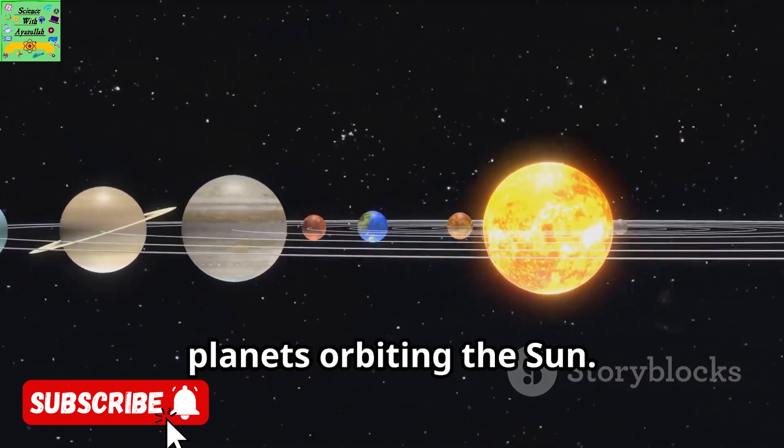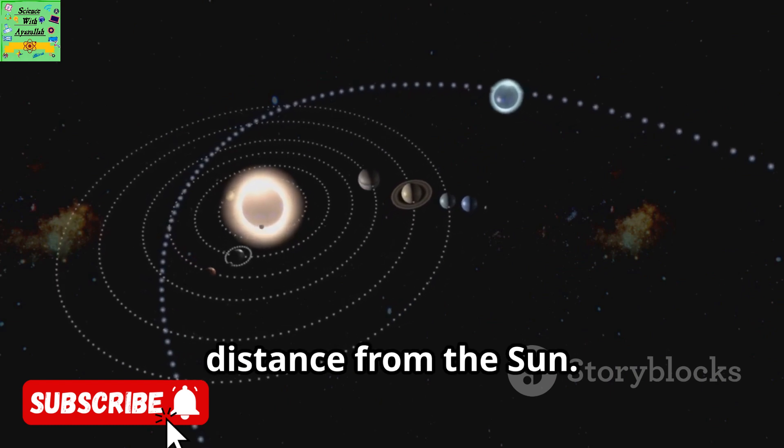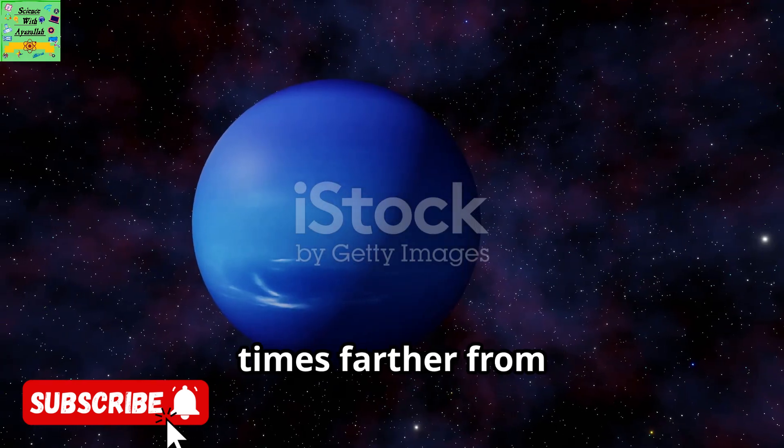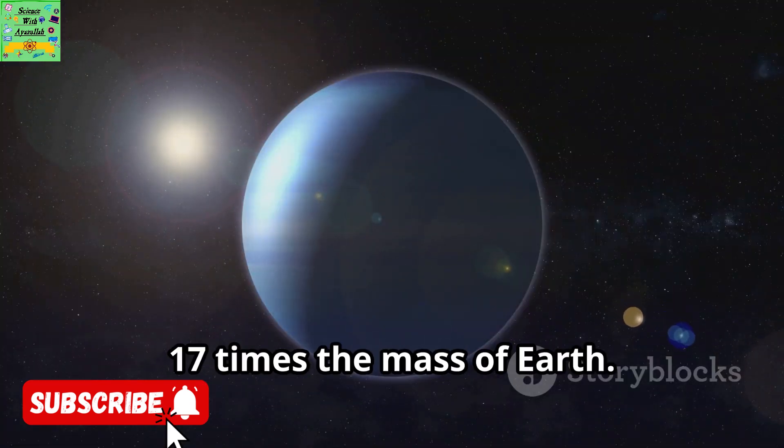That strong pull is what keeps all the planets orbiting the Sun. But that gravity gets weaker with distance from the Sun. Neptune is about 30 times farther from the Sun than Earth is.